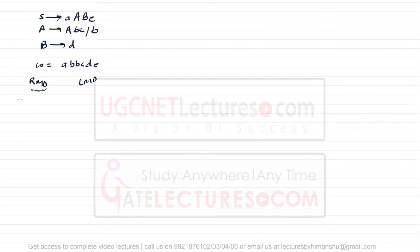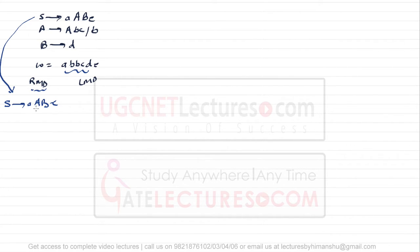Right Most Derivation means when you are trying to generate any string, you replace the right most variable from the given grammar. So, starting from S derives aABe, in this string we have two variables A and B. The right most variable is B, so in the next step we replace B: we get aAbce — wait, we replace the right most variable A — giving us aAbce, replacing A with abc.